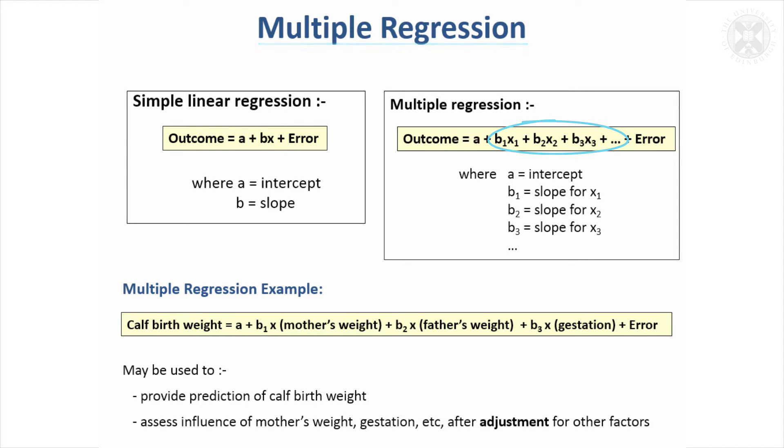That's easier to visualize through an example. If we were measuring calf birth weights and we had records of a mother's weight, the father's weight, and the gestation at birth, we could put all these into a multiple regression model. That potentially could be used to predict calf birth weight from the parents' weight and the gestation of the calf when it was born.